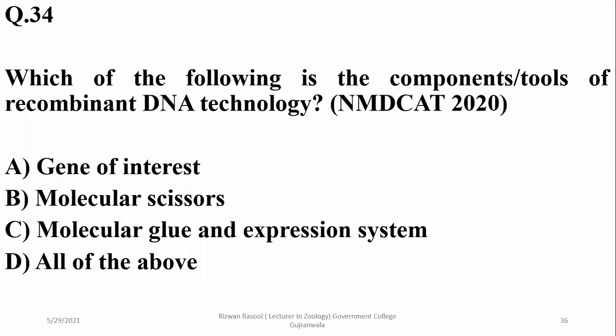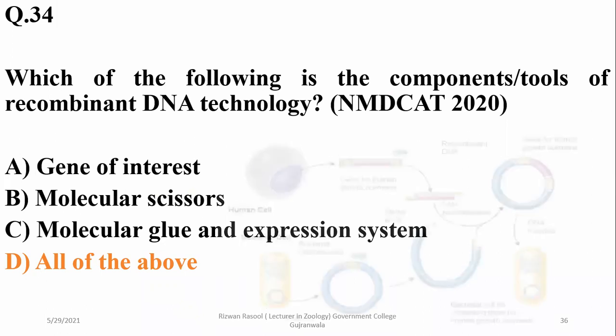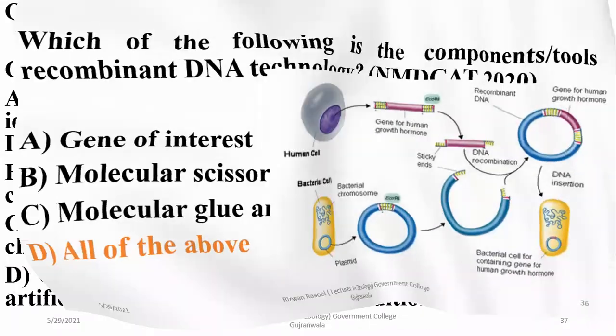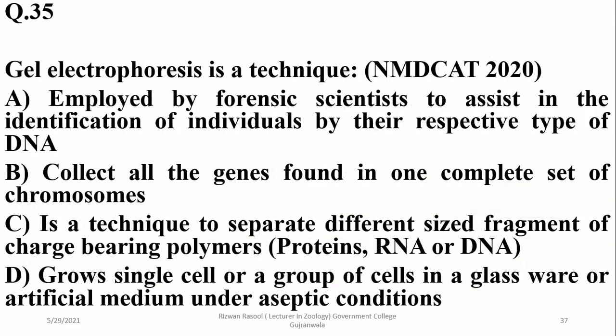Which of the following is a component of the tools for recombinant DNA technology? The gene of interest, molecular scissors, molecular glue, DNA ligase, and expression system are all tools for recombinant DNA technology. Gel electrophoresis is a technique used to separate different-sized fragments of charge-bearing polymers such as proteins, RNA, or DNA, Charlie.